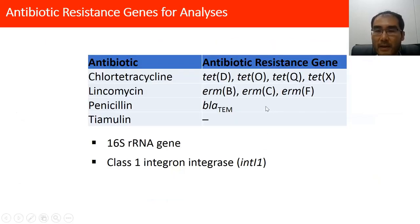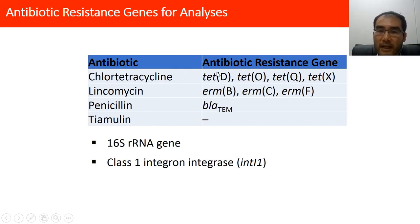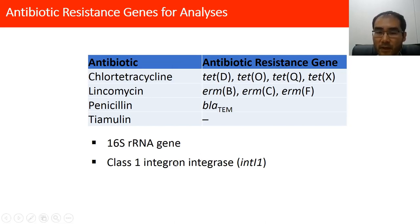We included four antibiotics in the study — chlorotetracycline, lincomycin, panosilin, and tiamulin — based on information from the facility operator. For each antibiotic, we measured several resistance genes: for tetracycline, we included TetD, TetO, TetQ, and TetX. We also included the 16S rRNA gene, which all bacteria contain, to quantify the overall bacterial community size. Additionally, we included the IntI1, or class 1 integrase gene, which is involved in horizontal gene transfer where an ARG in one bacterium can be transferred to another. The presence of this gene indicates potential horizontal gene transfer of ARGs between bacteria.